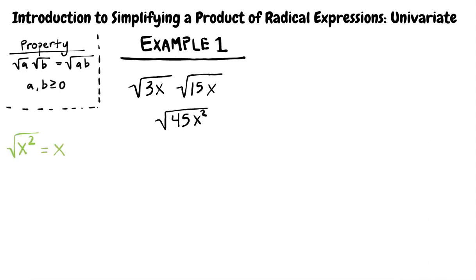Are we done yet? I think we can further simplify the expression. The square root of x squared is x because the radical and the exponent cancel each other out. Also, if we use the tree method to break down 45 into its prime factors, we can see that 3 appears twice.